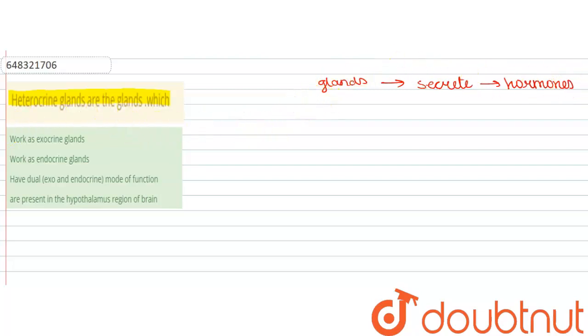There are two main types of glands: exocrine glands and endocrine glands.